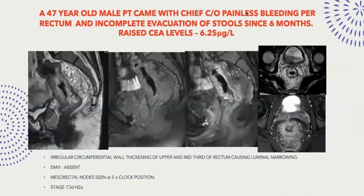A 47-year-old male patient presented with painless bleeding per rectum and incomplete evacuation of stools since six months. Lab results show raised CEA levels. MRI shows irregular circumferential wall thickening of the upper and mid-third of the rectum causing luminal narrowing. There is no extramural vascular invasion. However, the mesorectal fascia is involved and nodes are seen in the five o'clock position. It is staged as T3B N2A.